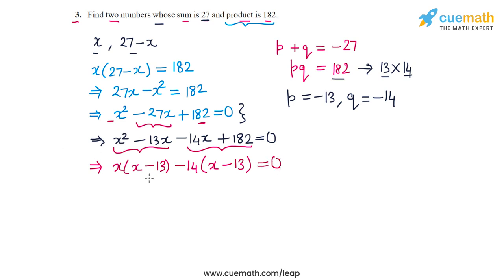So now we have a common factor of x minus 13. So let's take that out. So x minus 13 and then we are left with x minus 14 equal to 0.